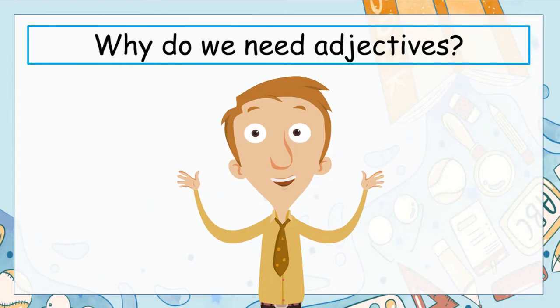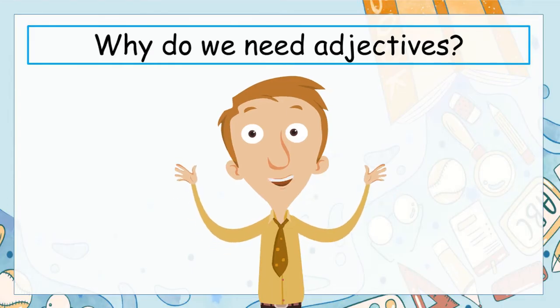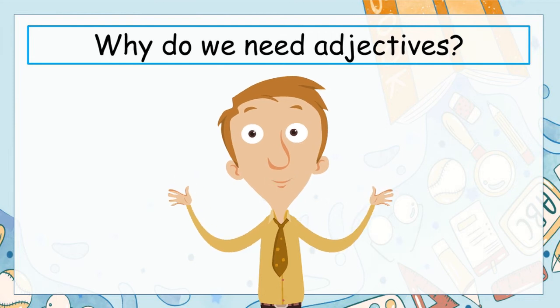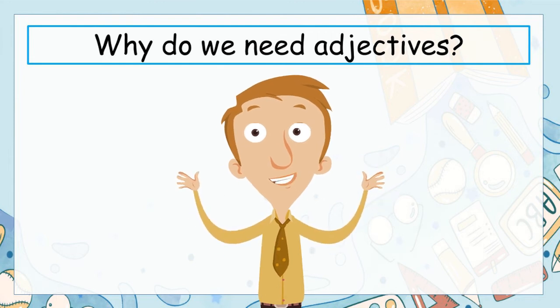Without adjectives, all of our stories and our writing would be extremely, extremely colourless. Without the juicy details of adjectives, all of the nouns in our stories would be very plain and boring. People wouldn't have interesting features or characteristics. Buildings would be boring and plain. The world would be colourless — it may as well just be black, white and grey.